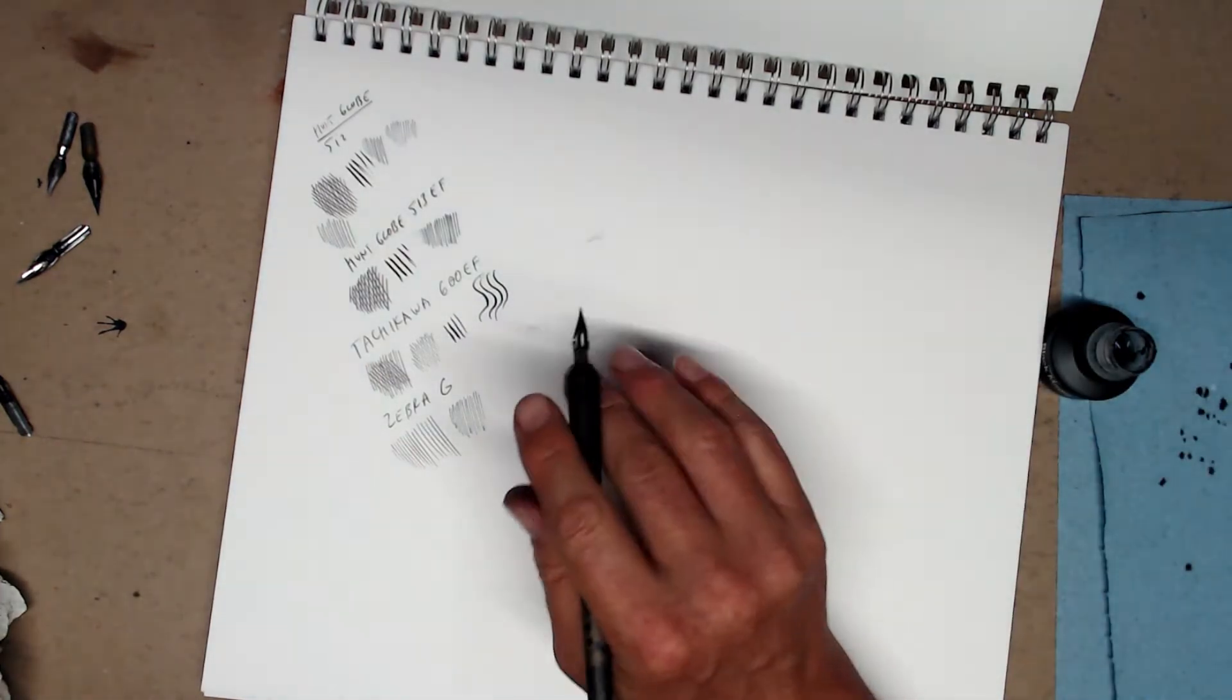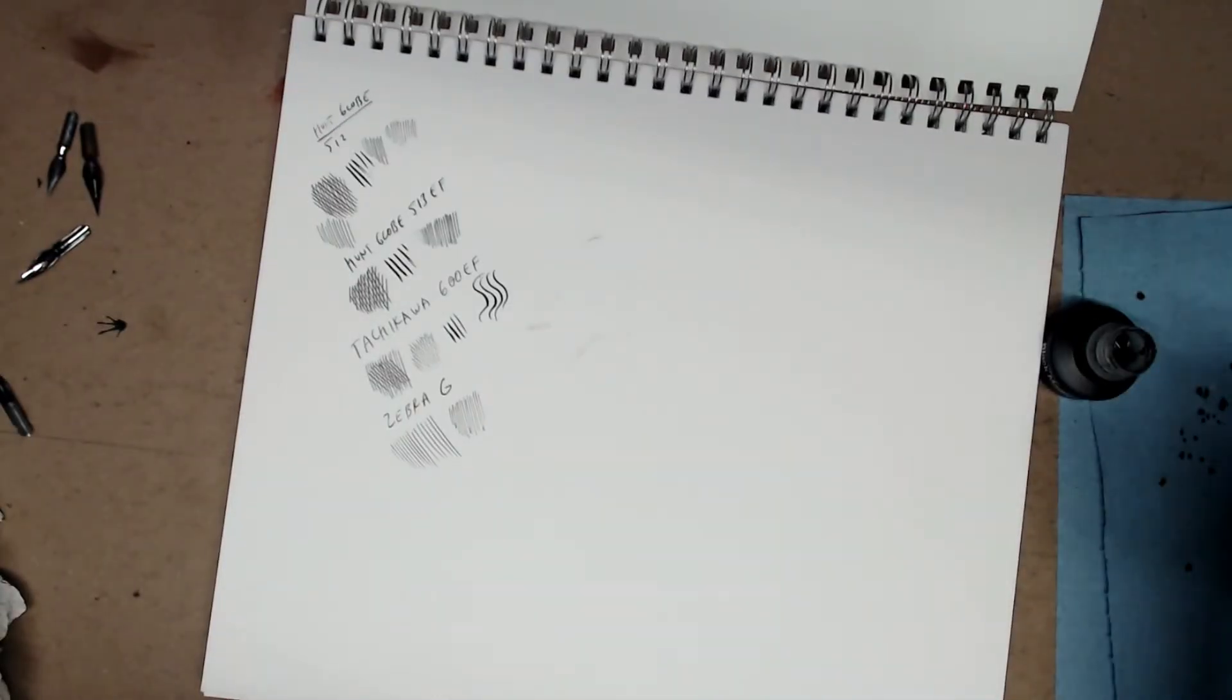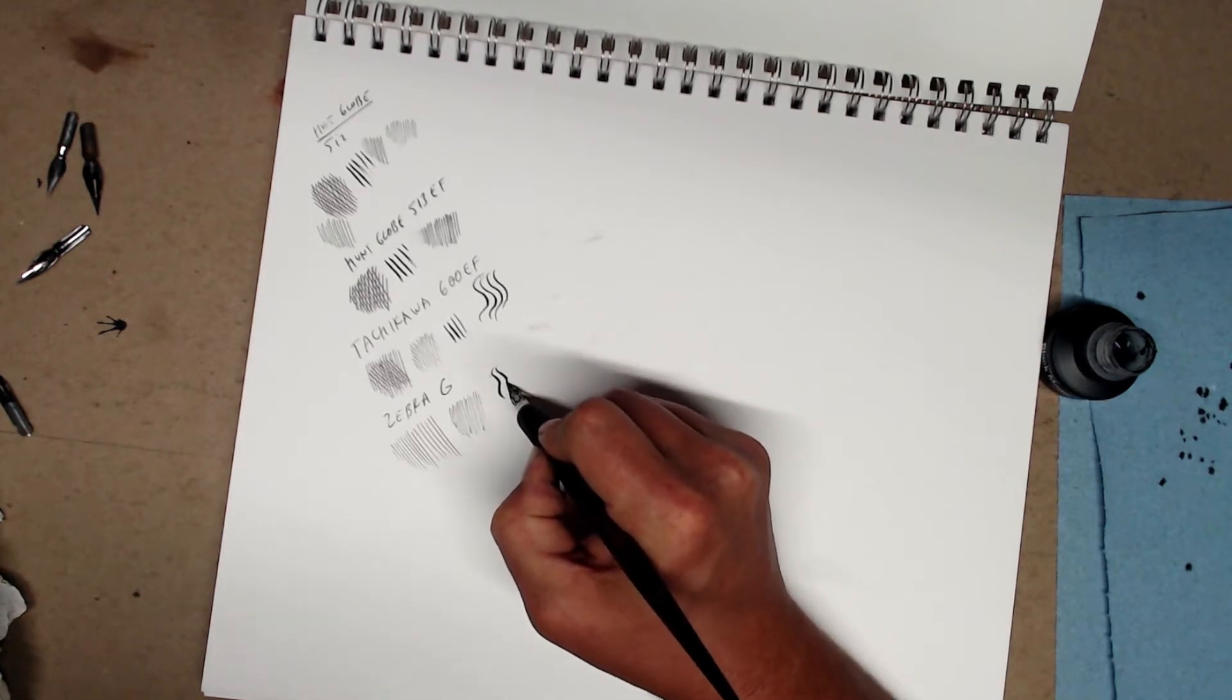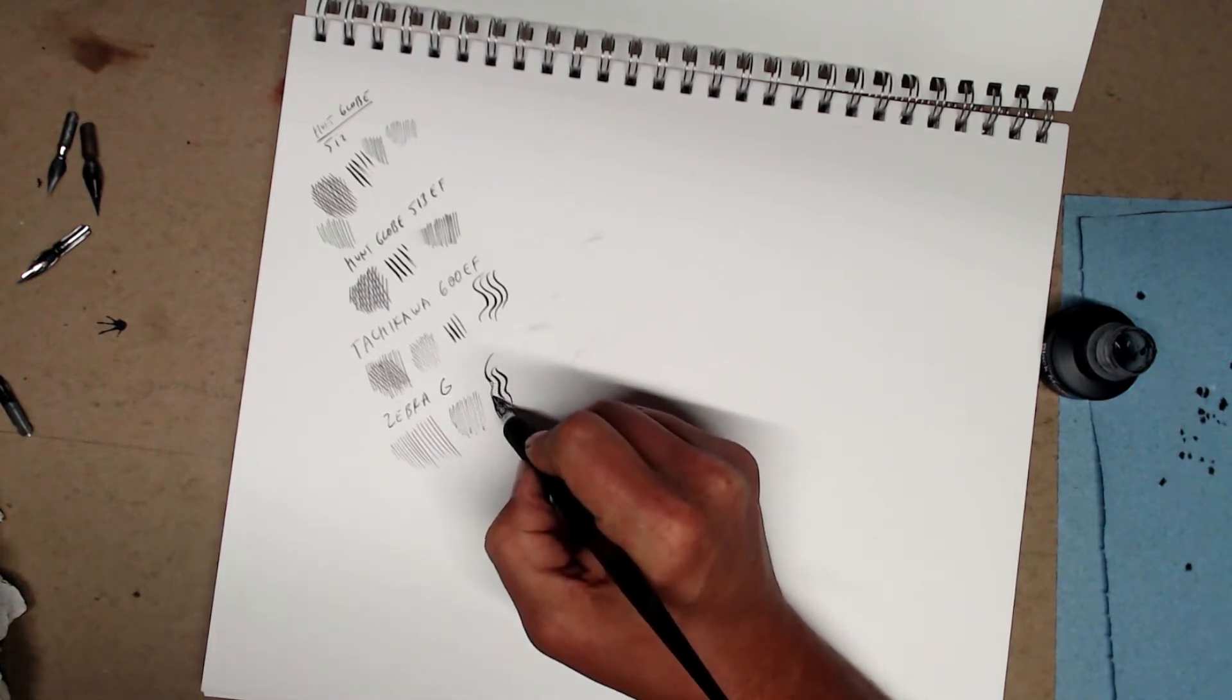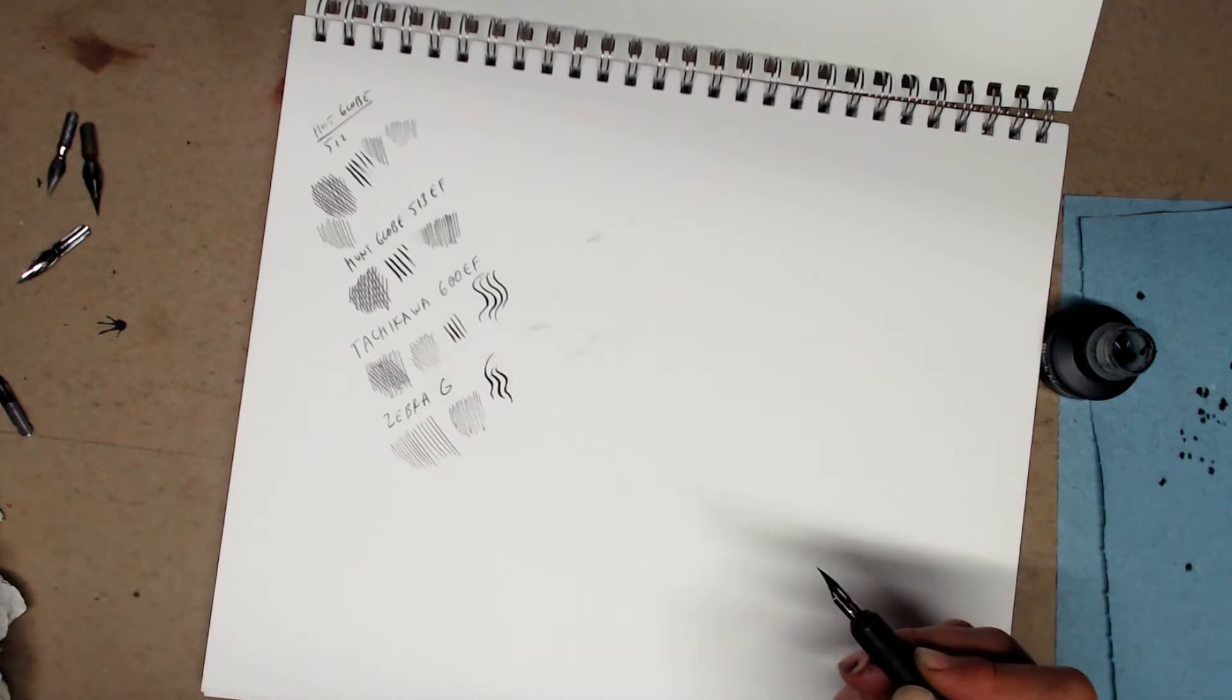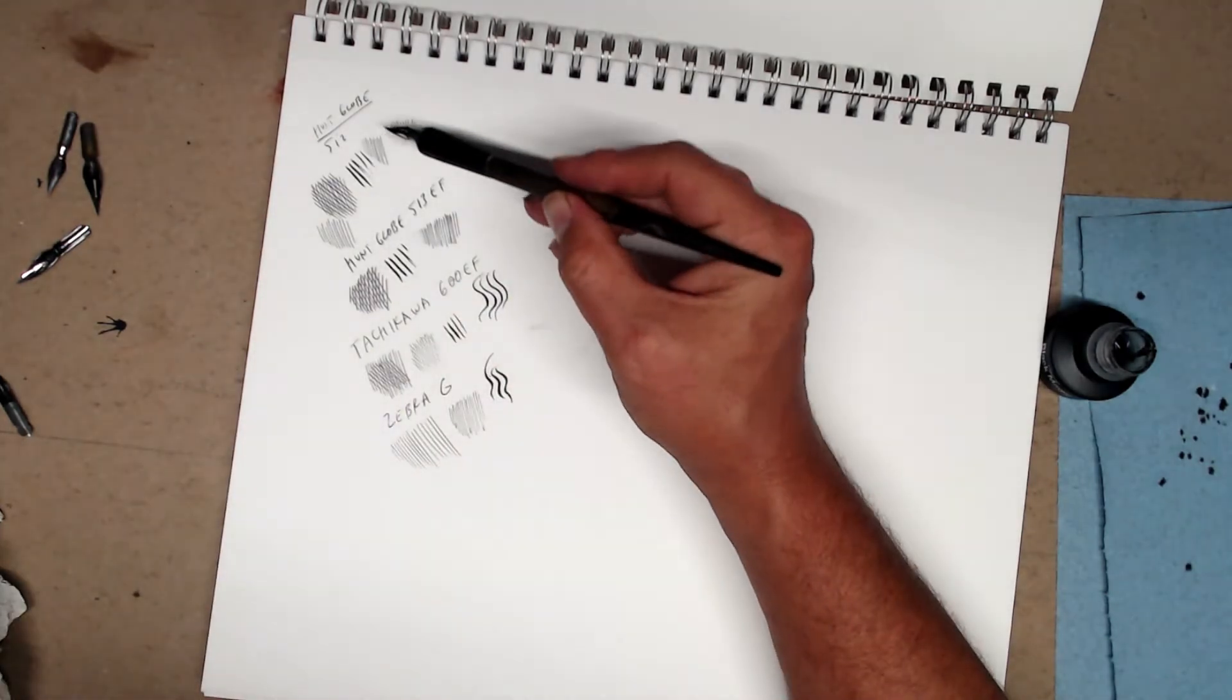This pen is for slightly more advanced users. It's more flexible. So I can put down a really thick, juicy line if I need to. Like that. I would say, you know, look, start off with your Hunt Globe 512, Hunt Globe 513F.